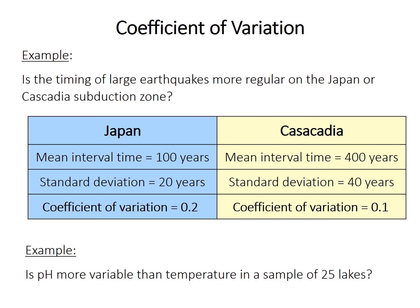So another example for using coefficient of variability could be say if you want to compare the variability of pH levels and temperature in a bunch of different lakes. pH and temperature are measured in different units. And so it wouldn't make sense to compare standard deviations because those also have those same units, pH units versus degrees Celsius. And so the coefficient of variation is basically a non-dimensional method of comparing variability.